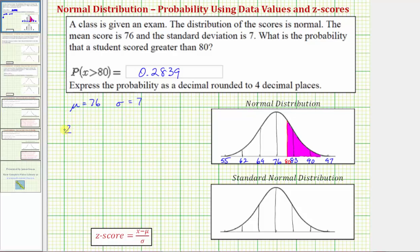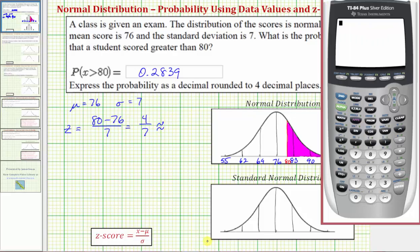So the z-score for the test score of 80 would be 80 minus the mean of 76 divided by the standard deviation of seven. Well 80 minus 76 is four, so the z-score is four-sevenths, which as a decimal would be approximately 0.5714.